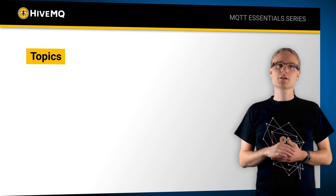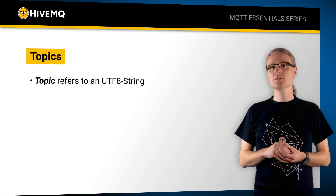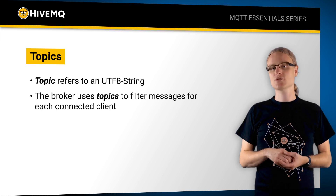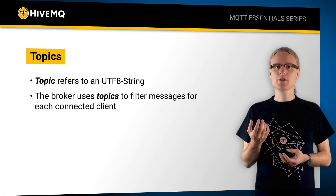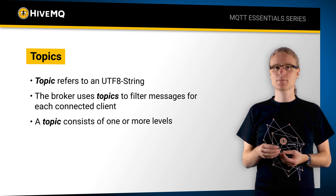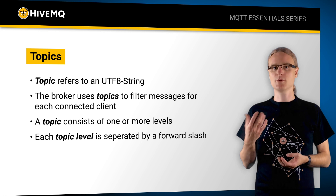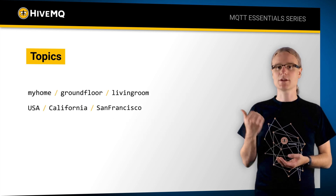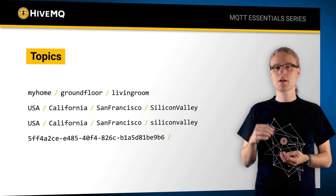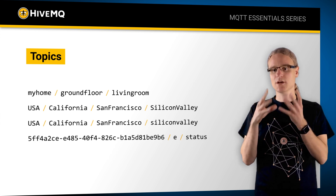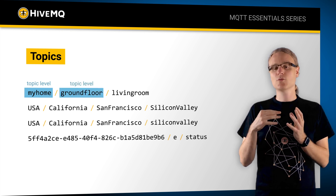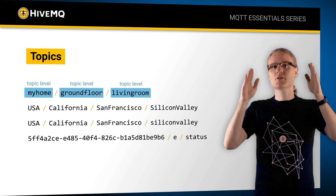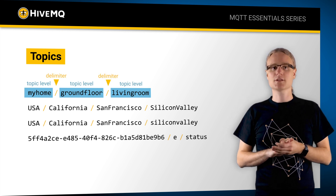More generally speaking, the word topic refers to a UTF-8 string that the broker uses to filter messages for each connected client. A topic consists of one or more levels, and each topic level is separated by a forward slash. We can see some topic examples here. Topics are hierarchical, similar to what you know from a file system, so we have this kind of tree delimited by forward slashes.